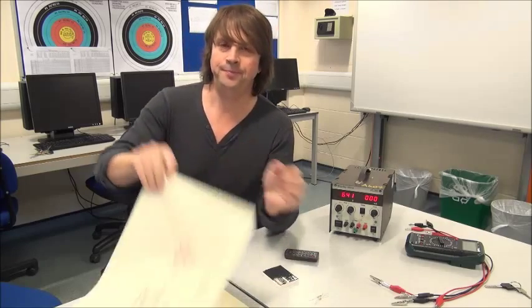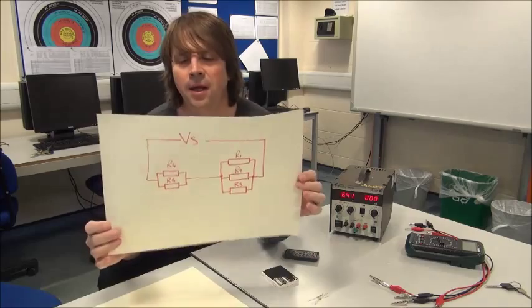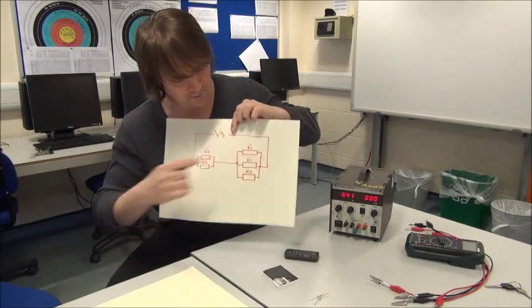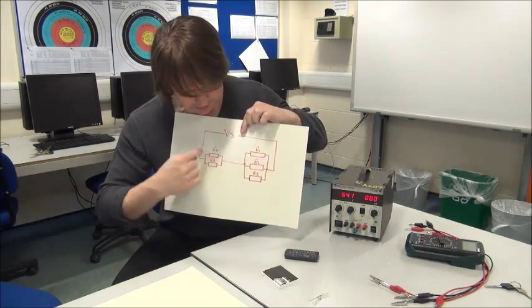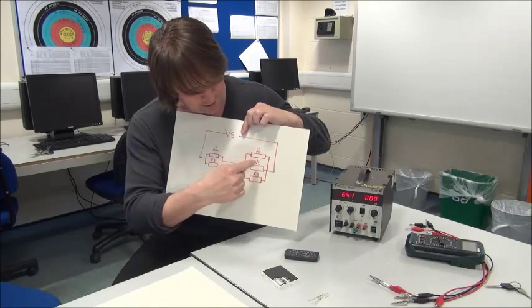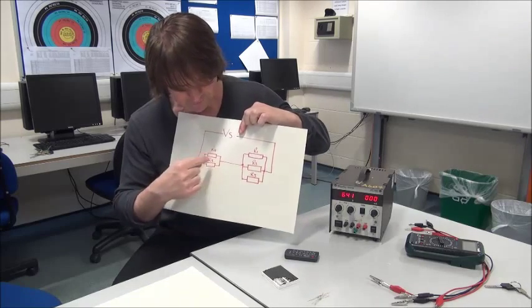Hello, today we're going to build a simple DC network, this one here. It comprises of five resistors and we've got two parallel banks, R1, R2, R3, R4 and R5.